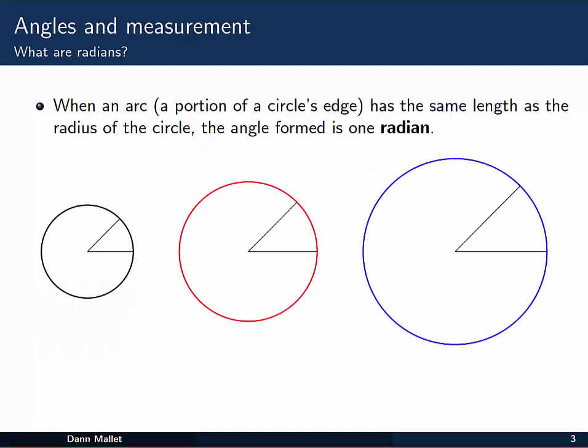When we have an arc, that's a portion of a circle's edge, which has the same length as the radius of the circle, the angle that's formed by that arc is called 1 radian.